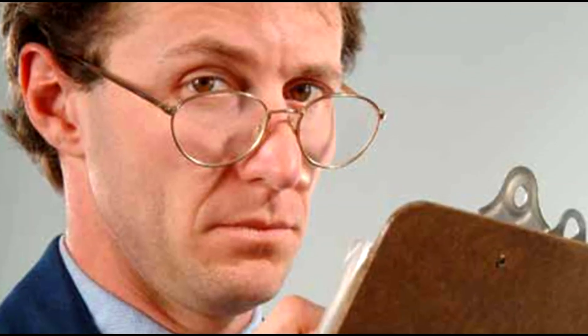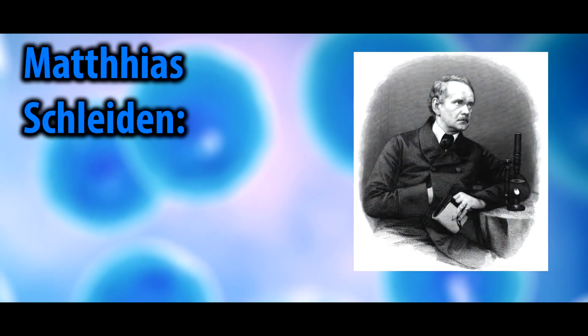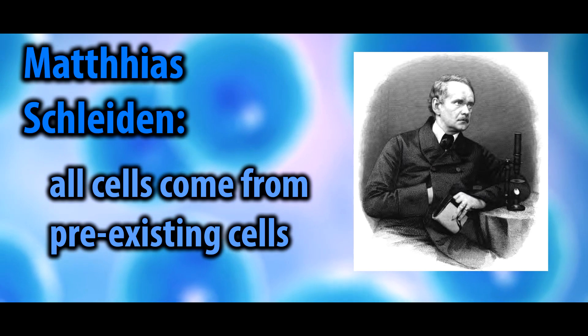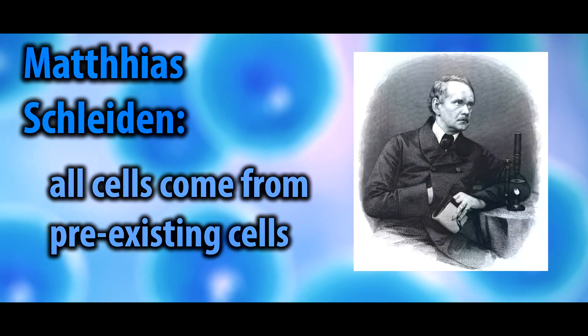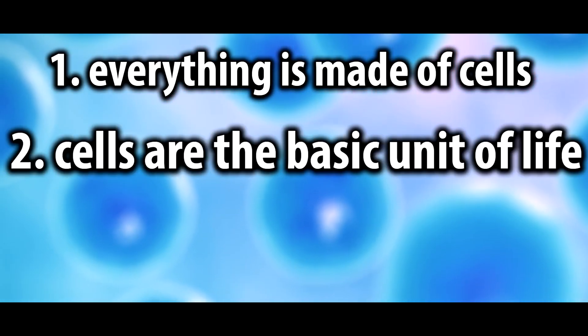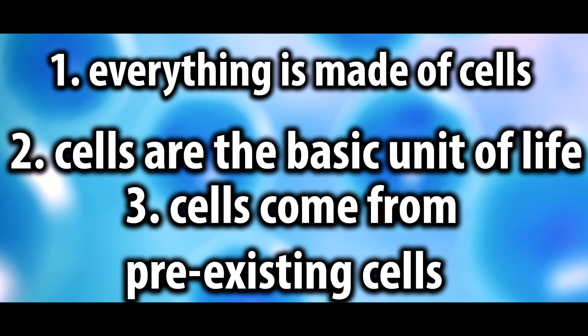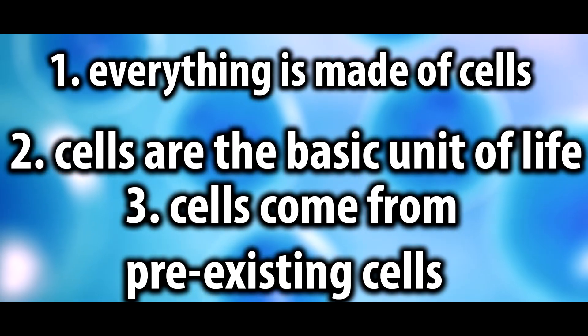Many scientific observations passed until a groundbreaking contribution was made. Matthias Schleiden gave the idea that all cells arise from living, pre-existing cells. These three tenets made up what is cell theory: Robert Hooke stated that everything was made of cells and that cells are the basic unit of life, and Matthias Schleiden gave the idea that cells came from pre-existing cells. This trinity of three major discoveries would change life science forever.